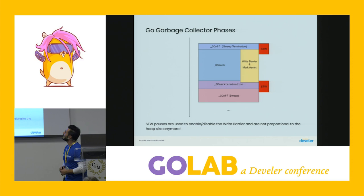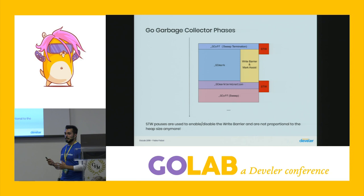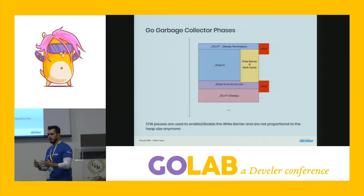To summarize all GC phases: there are two stop-the-world pauses — at the beginning and end of the marking phase — primarily to enable and disable the write barrier and mark assist mechanism. Importantly, the length of these stop-the-world pauses is no longer proportional to the size of the heap, which is a significant improvement over stop-the-world garbage collectors.